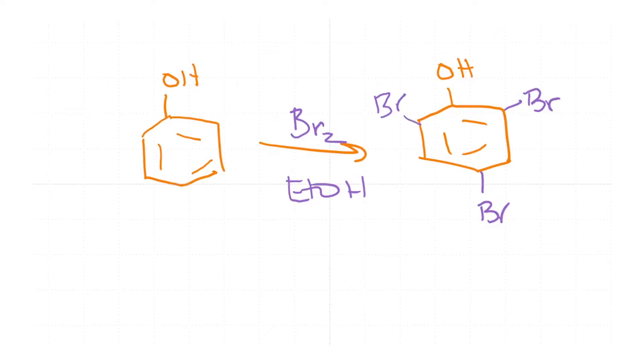In the lectures we have discussed so far, we have primarily looked at benzene. Now we will start looking at substituted benzenes. The first example we are going to see is phenol, and this is going to be basically bromination of phenol.